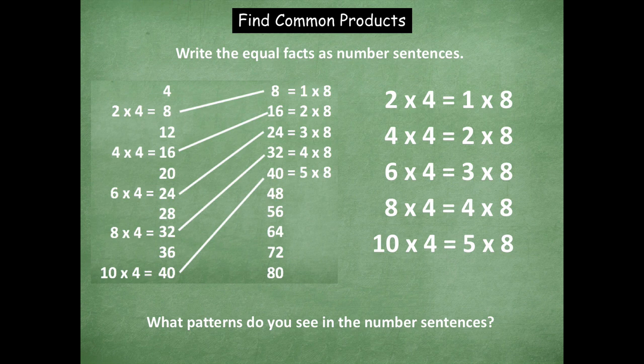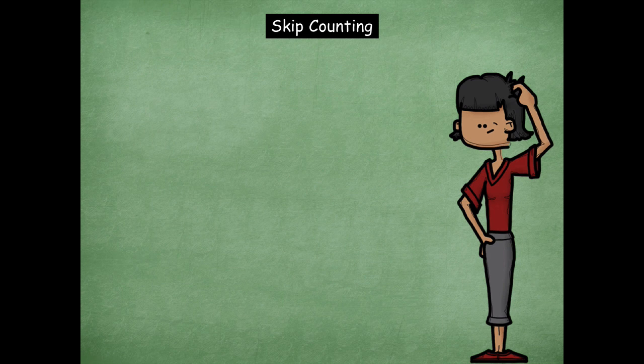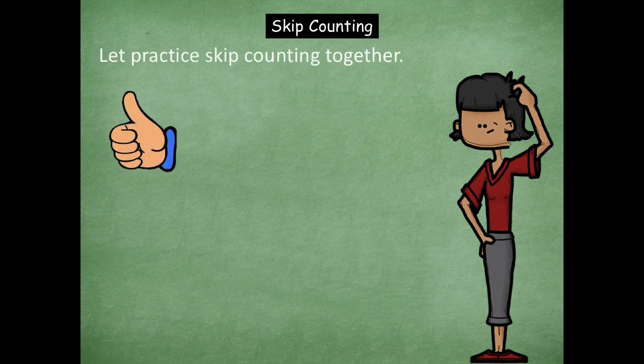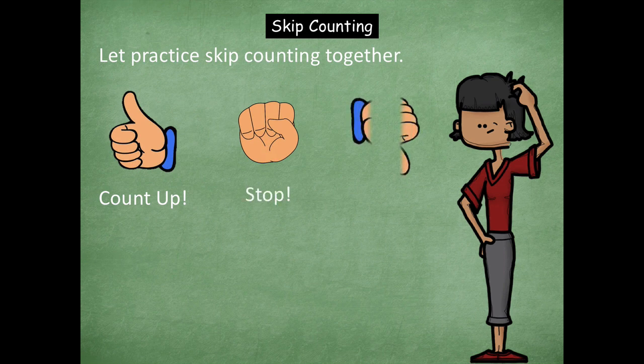Great job with that, friends. You did an awesome job going step by step to match the products, find equal products, and find out what they have in common with each other. Now we're going to do some skip counting. Thumbs up means we're counting up, a fist means we're stopping, and thumbs down means we're counting down.